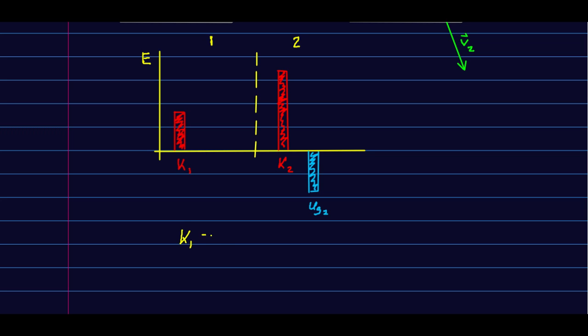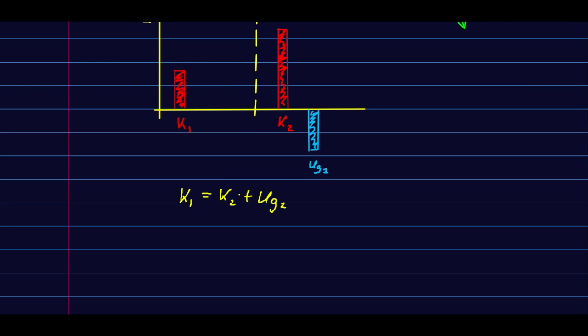Let's solve for v2. I'm going to rewrite this as half m v1 squared equals half m v2 squared plus mg y2, although I'll note that y2 is a negative number. Like before, the masses cancel, and I'm going to solve for v2.